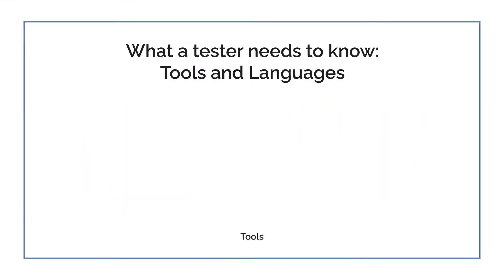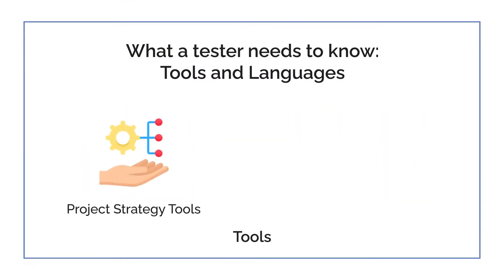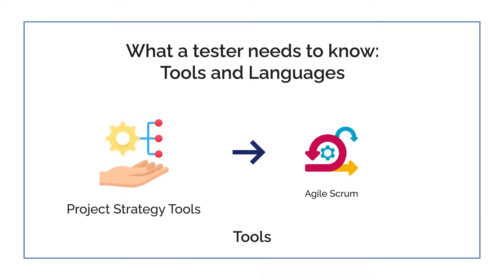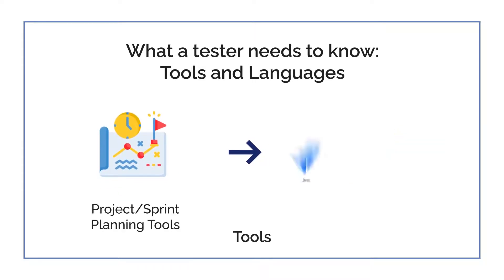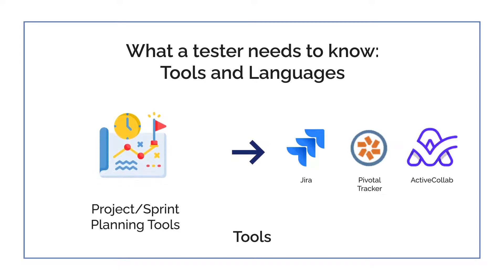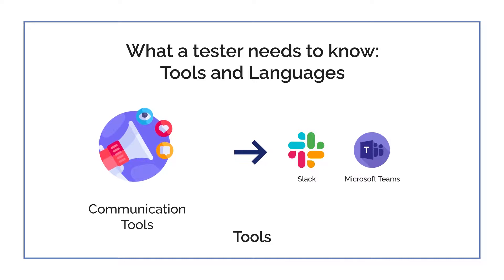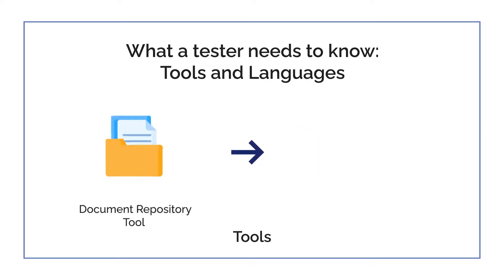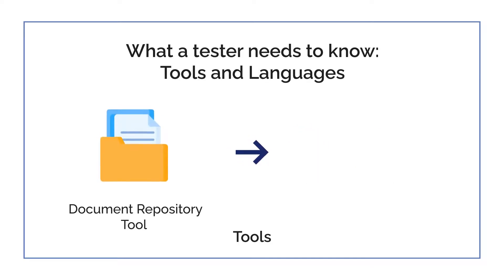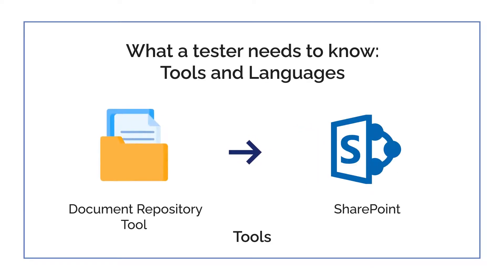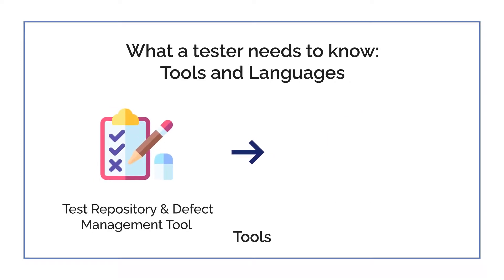Project and strategy tools: Agile, Scrum, Kanban boards; project and sprint planning tools — Jira, Pivotal Tracker, Active Collab; communication tools — Slack, Microsoft Teams, Yammer; document repository tool — SharePoint; test repository and defect management tool — Jira.